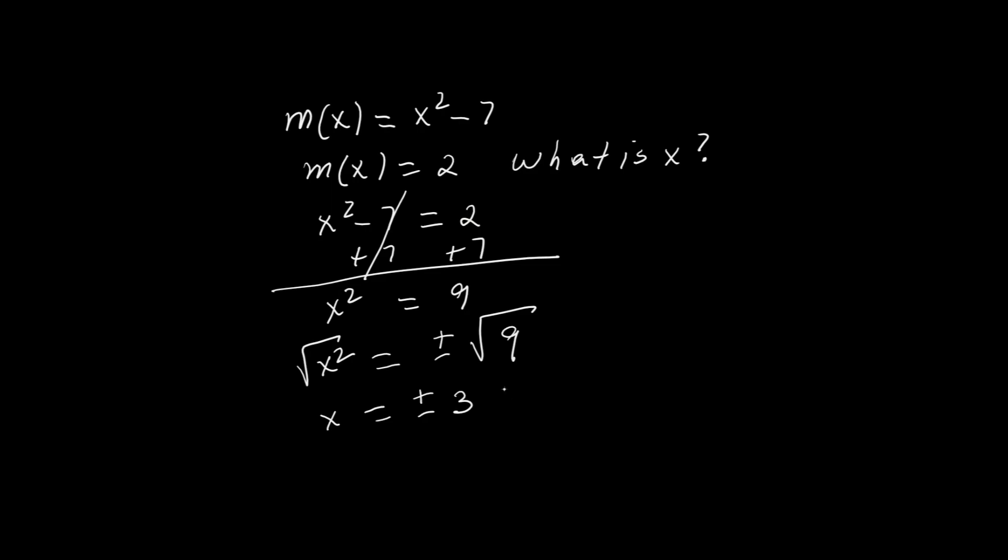This is common with quadratic functions. Because the graph is a curve, the same output can come from two different x values.